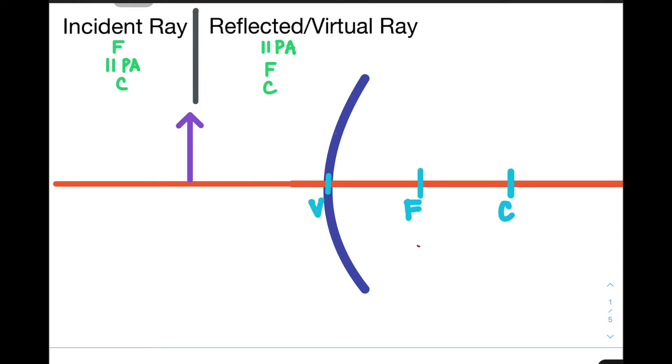Now, if the incident ray, which is a ray from the object, is parallel with the principal axis, it will be then reflected aligned with the focus of the mirror. And finally, if the incident ray is aligned with the center, it will then be reflected aligned with the center of curvature.